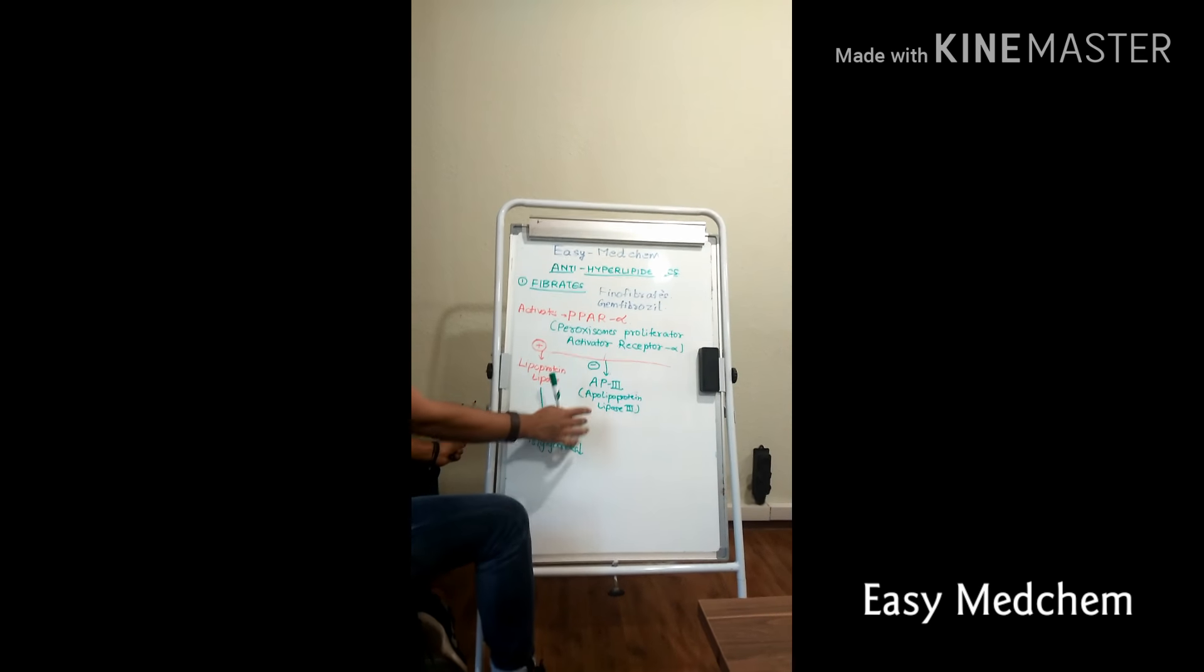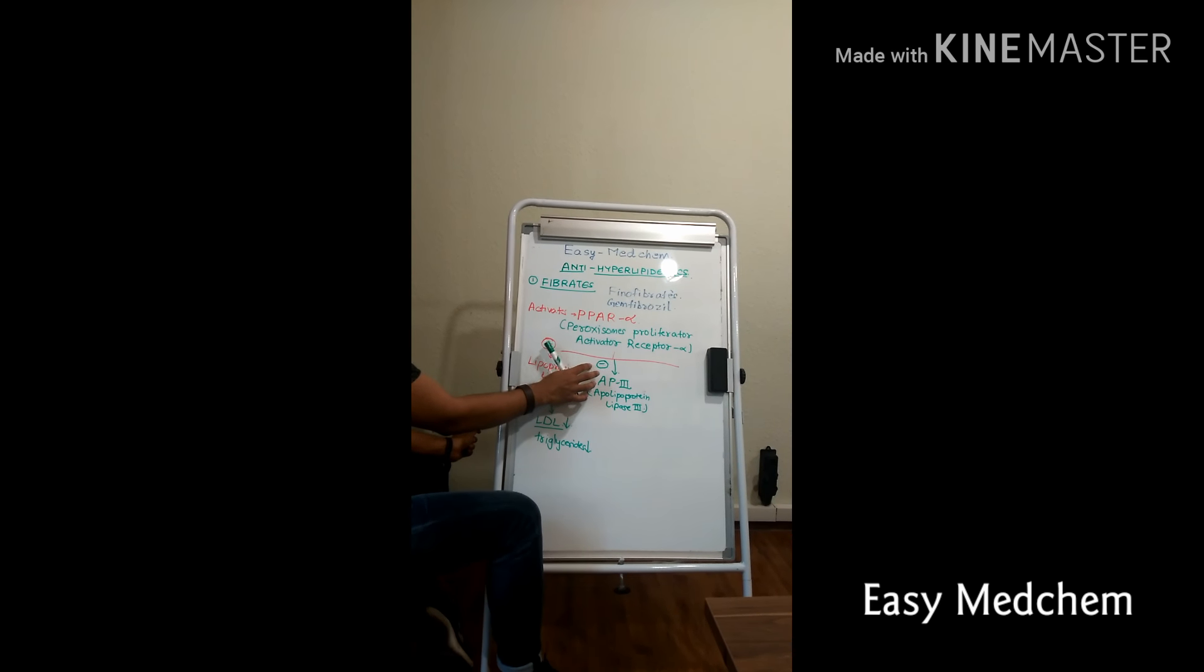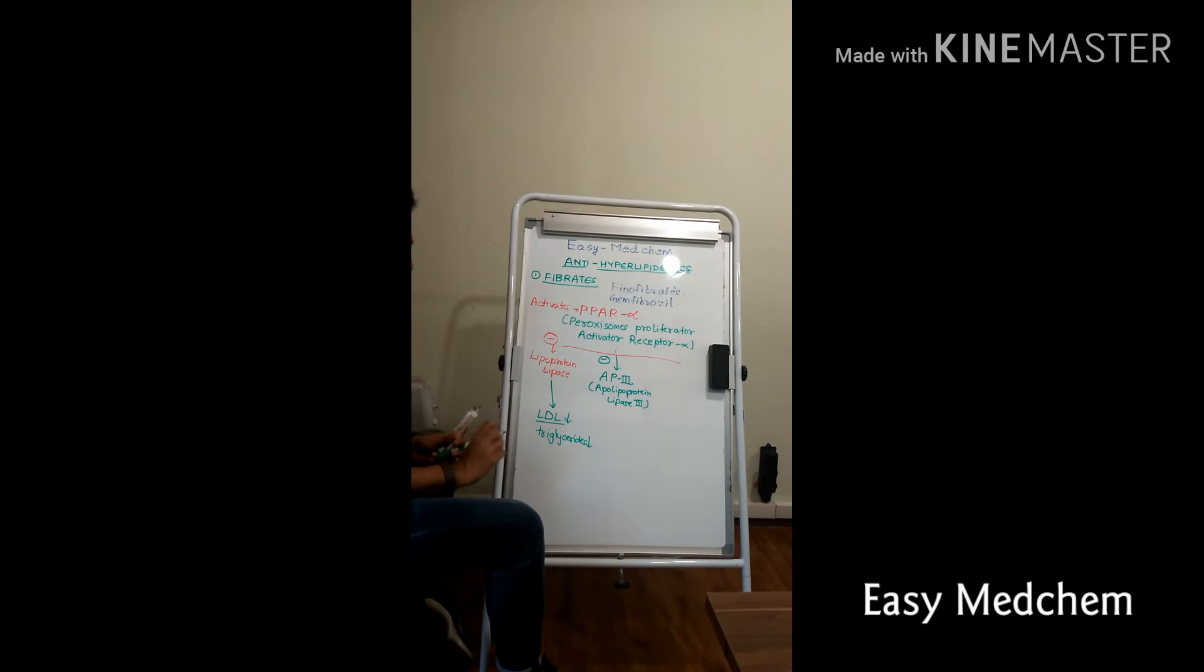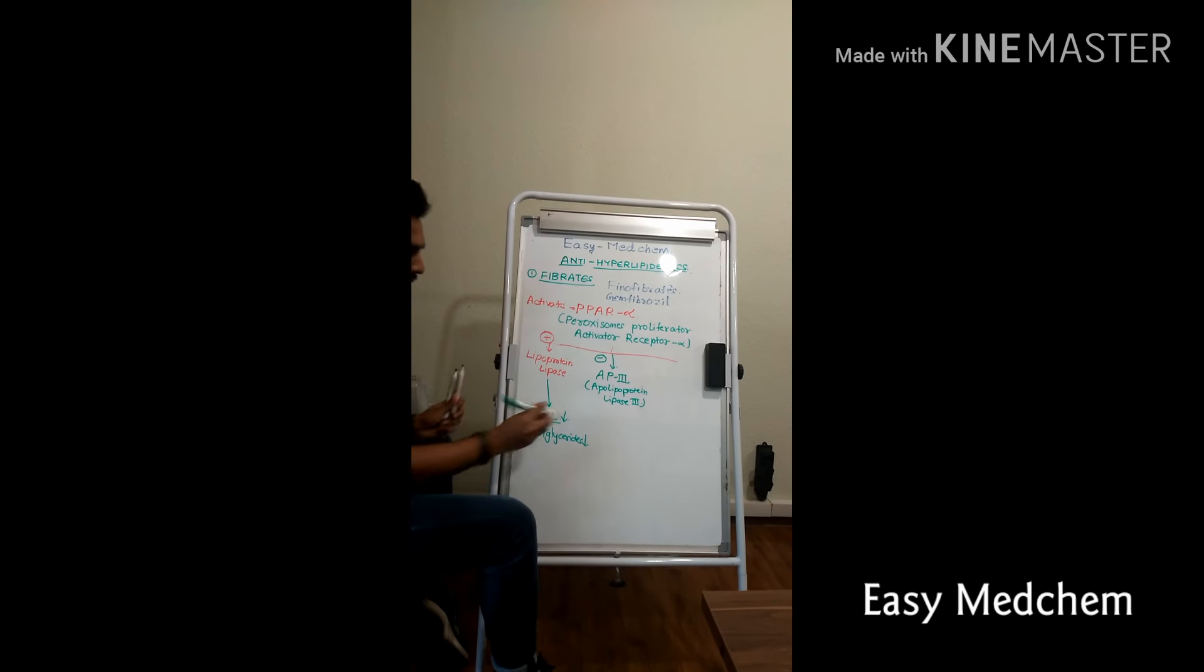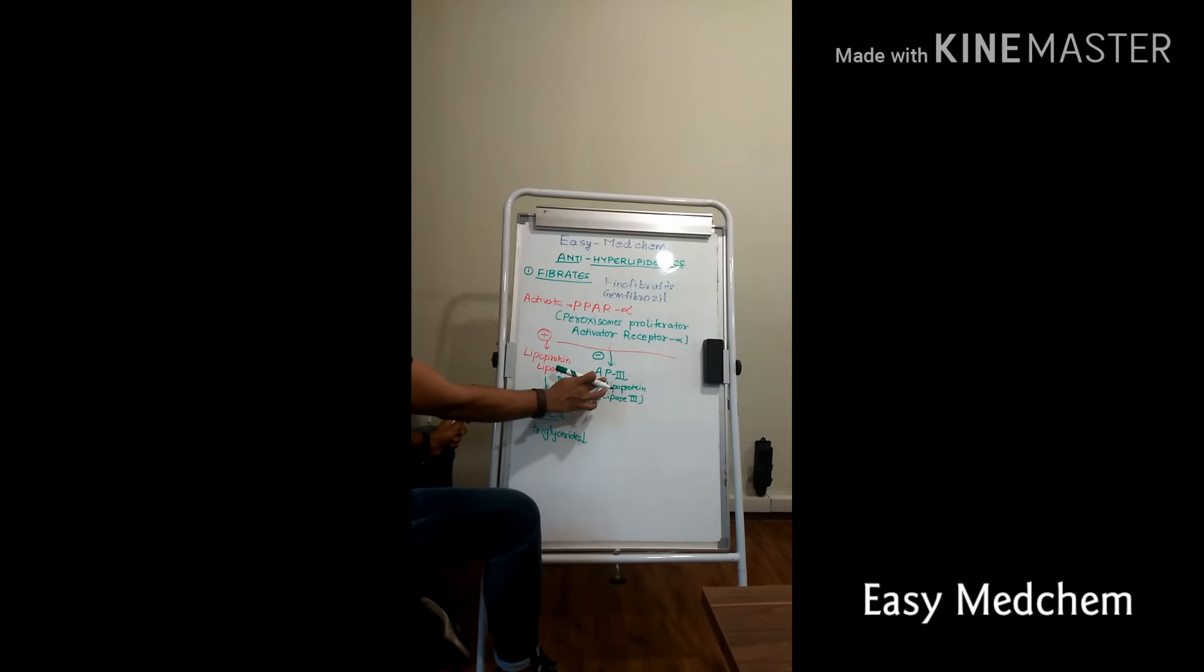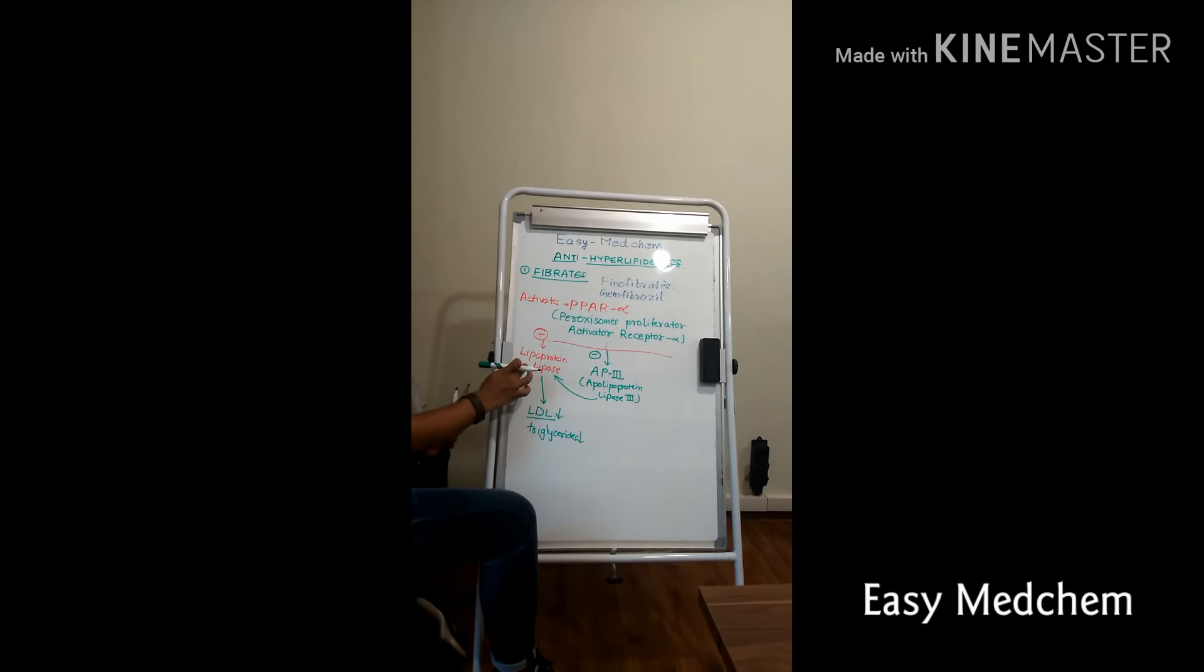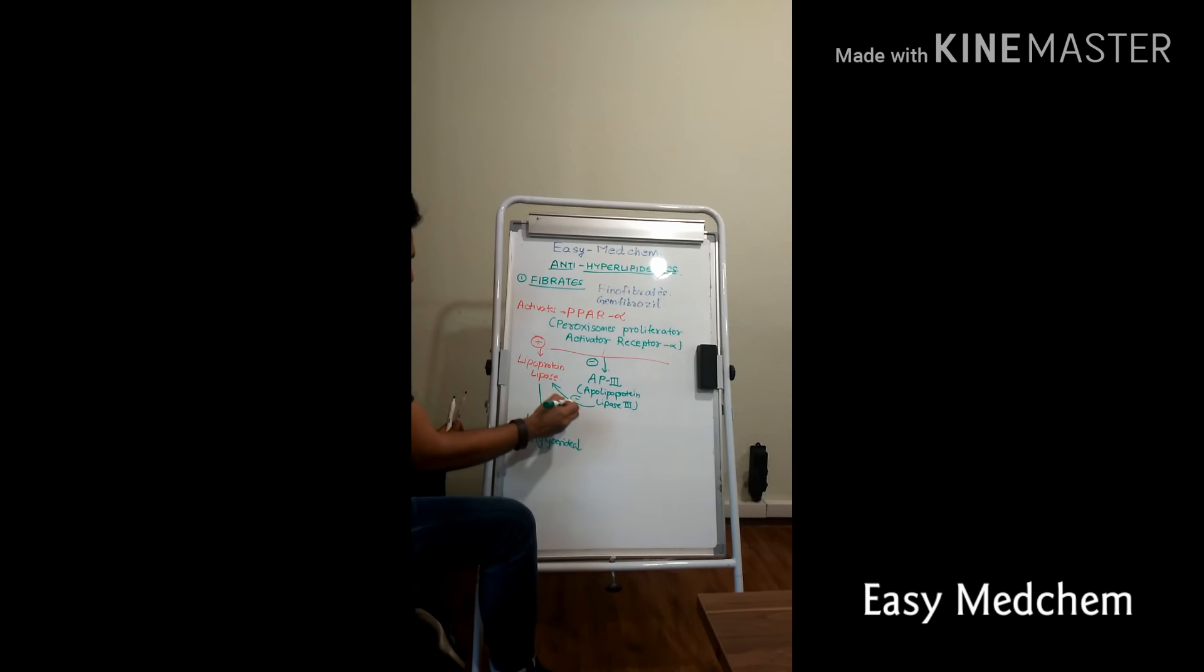This PPAR alpha is doing the second job. It will down-regulate or it will inhibit this enzyme. What this enzyme is actually doing in our body? It will inhibit this enzyme. Actually this enzyme is always present in our body and this will inhibit the lipoprotein lipase.